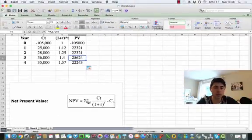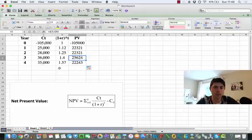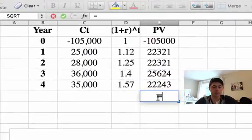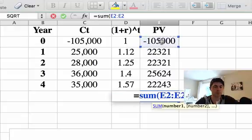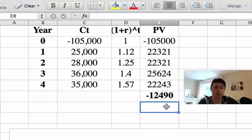And to get the net present value, the formula just tells you to sum it up. So negative 12,490. The conclusion here is that because it's negative, it's not a good investment. A good investment is seen as a positive number because when you discount all your future cash flows, you want a positive number. So the conclusion is do not invest in this project at a discount rate of 12%.